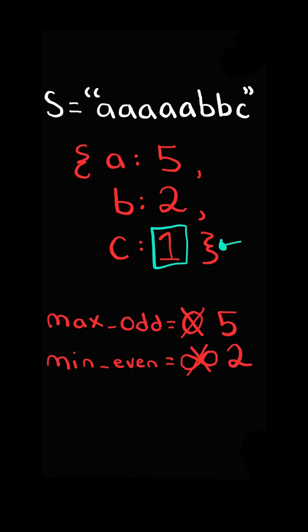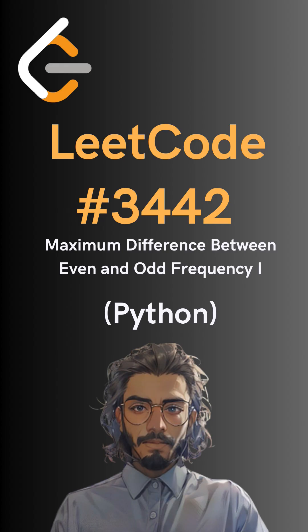The frequency is odd, but it is not greater than max odd, so we don't update. At the end, we return max odd minus min even. And here's the code to do so.